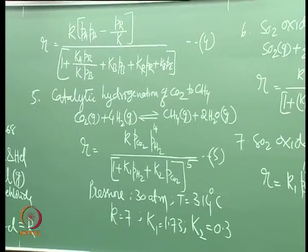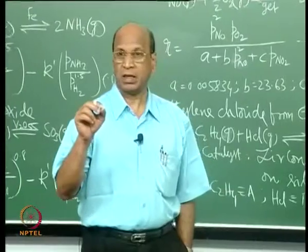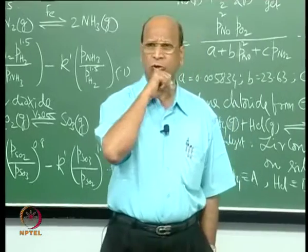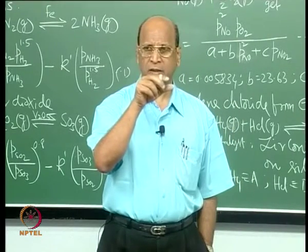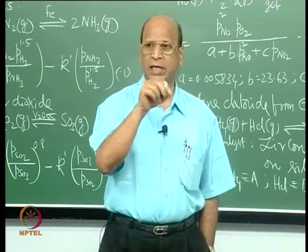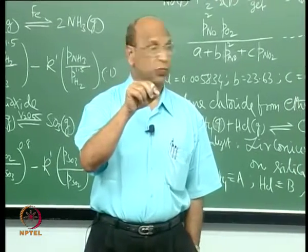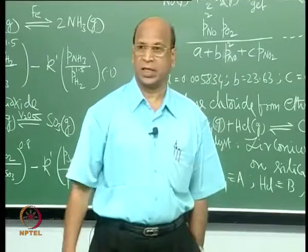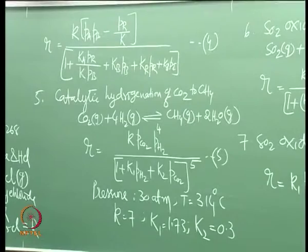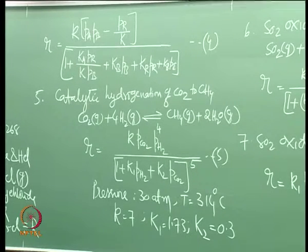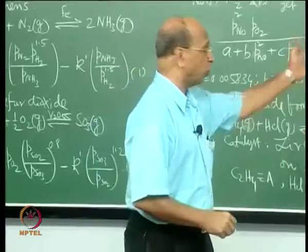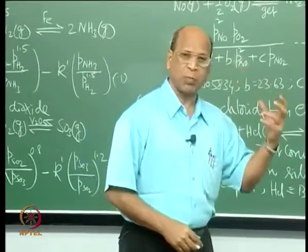The Nobel laureate Ertl - I think around 2008 - got the Nobel prize for surface chemistry and catalytic reactions. He gave mechanisms for CO oxidation to CO₂, and also for ammonia synthesis. His ammonia model is fantastic - very complicated, because hydrogen when it goes and sits on the active site, it again dissociates.